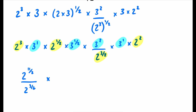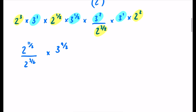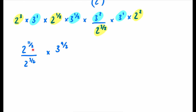For the powers of two: three plus a half plus two gives five and a half, which is eleven over two. That's being divided by two to the power of three over two. For the threes: one plus a half plus one plus one gives four and a half, which is nine over two. So for the final step, eleven over two minus three over two gives eight over two, which is four. The answer is two to the power of four multiplied by three to the power of nine over two — so a equals four and b equals nine over two.